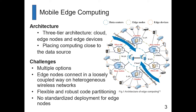In edge computing we have a lot of challenges. For example, it has multiple options, and in the edge computing model, the edge nodes connect in a loosely coupled way on a heterogeneous wireless network. We think the network is flexible and it has robust code partitioning, but currently there is no standardized deployment for edge nodes.